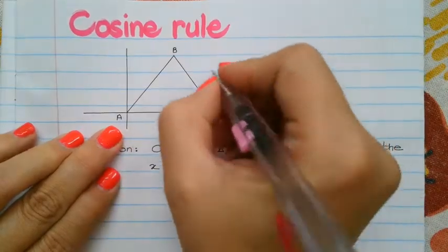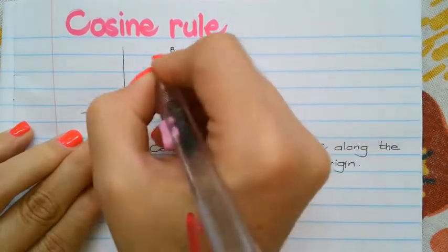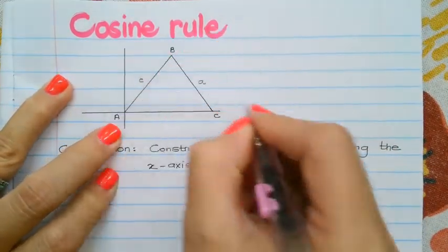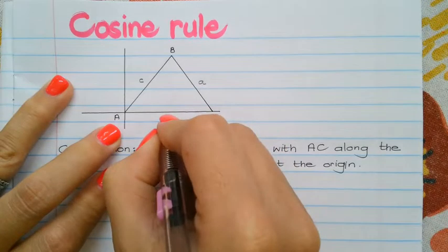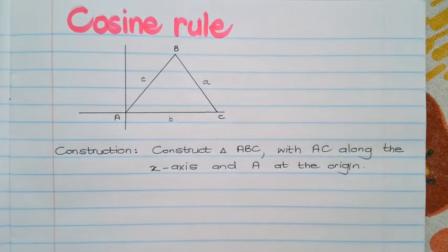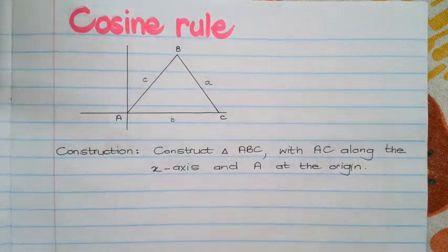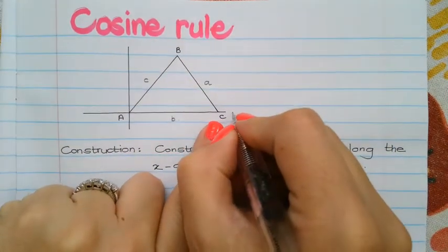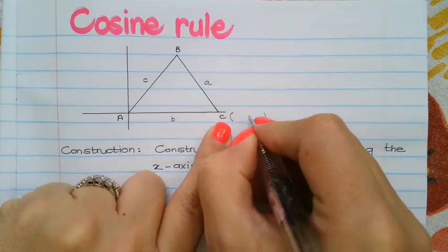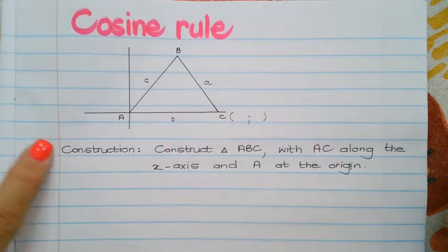So opposite big A, small a, opposite big C, small c, and opposite big B, small b. So for this, I will put in, okay, before I do that, let's just quickly see whether or not we know what the coordinates of C is.